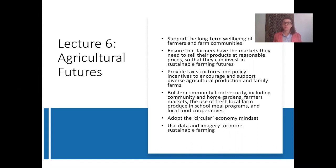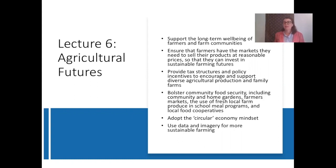The first is supporting the long-term well-being of farmers and farm communities. The second looks at ensuring that farmers have the markets they need to sell their products at reasonable prices so that they are able to invest in sustainable farming futures. The third is to provide tax structures and policy incentives in order to encourage and support diverse agricultural production and family farms. The fourth looks at bolstering community food security, including community and home gardens, farmers markets, the use of fresh local farm produce in school meals, and local cooperatives. The fifth looks at adopting a circular economy mindset. And the last looks at data and imagery and advanced technologies in terms of providing a more sustainable farming future.